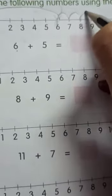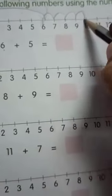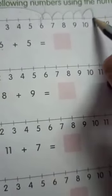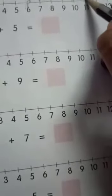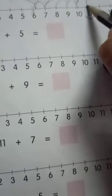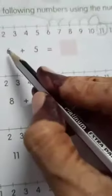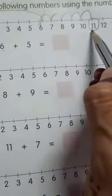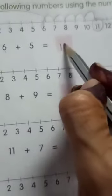1, 2, 3, 4, 5. After taking 5 forward jumps, we are reaching at 11. That means, 6 plus 5 is equals to 11.